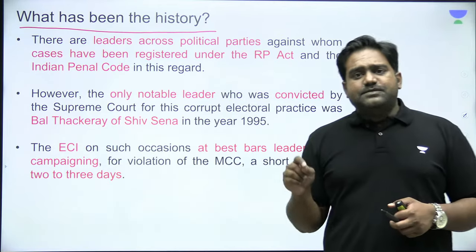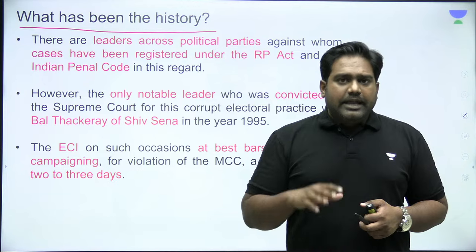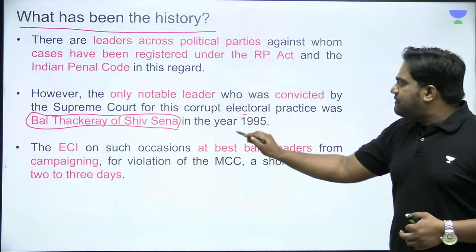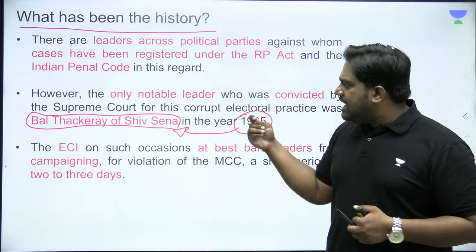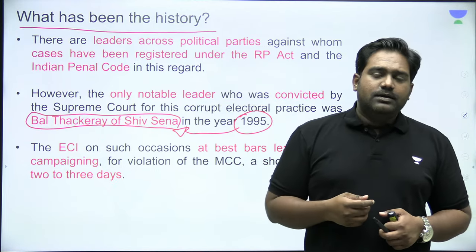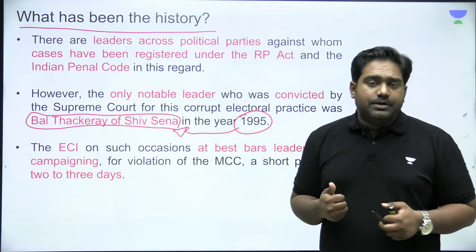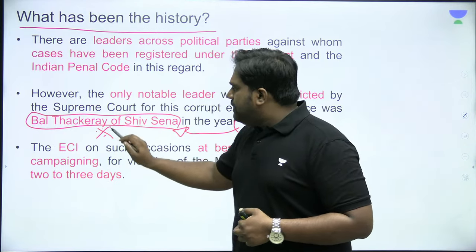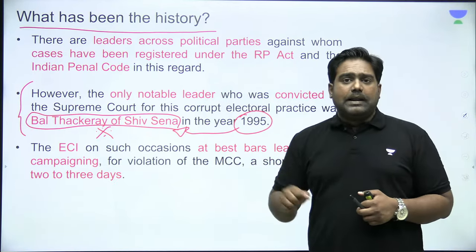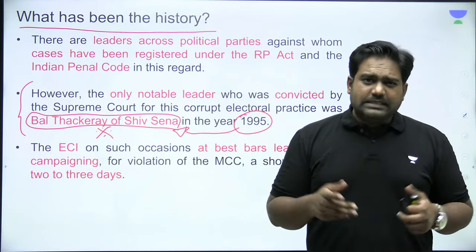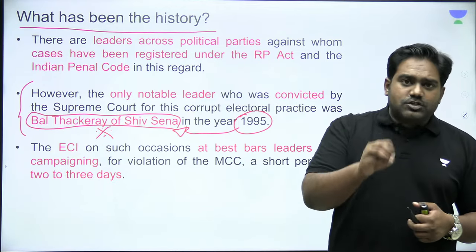In fact, there is only one major politician who has ever been convicted of this offense — Bal Thackeray of Shiv Sena, who was convicted in 1995 for seeking votes in the name of language and religion. Shiv Sena is a right-wing conservative party which has often fought elections on lines of language, regional identity, and religion. Other than Bal Thackeray, most leaders and politicians have gotten away with it, pointing to the weakness in enforcement and implementation.